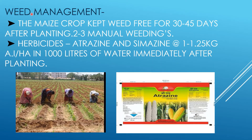For weed management, keep the maize crop weed-free from 30 to 45 days after transplanting. Perform 2 to 3 manual weedings. To control weeds, use herbicides like Atrazine and Simazine at 1 to 1.25 kg per hectare mixed in 1000 liters of water, and spray in the main field within 48 hours immediately after transplanting.